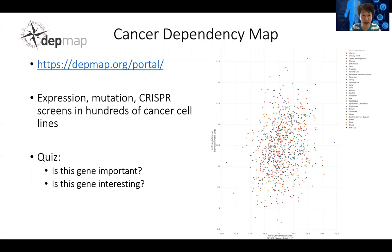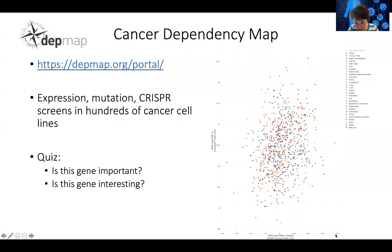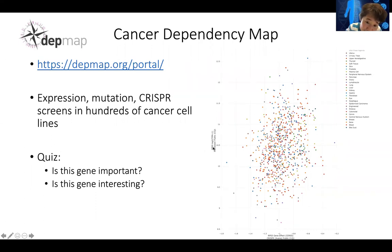By now the Broad Institute has profiled hundreds of cell lines. In one example, the x-axis represents whether a gene is positively or negatively selected — you can think of it as a log fold change — and the y-axis represents the expression level of the gene. This gene shown is RPS5, and it is very negatively selected.